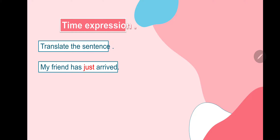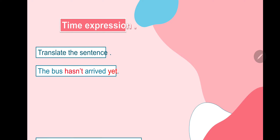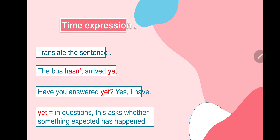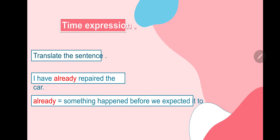My friend has just arrived — just arrived a short time ago. The bus hasn't arrived yet — 'yet' is used with 'not', something expected but hasn't happened. Have you answered yet? — used in a question at the end. I have already repaired my car — something happened before we expected it to.